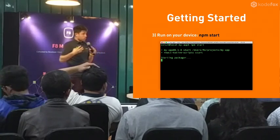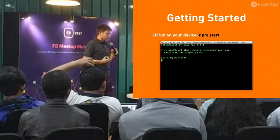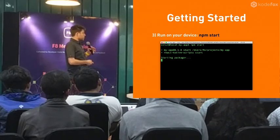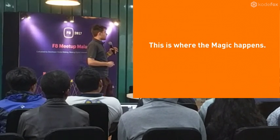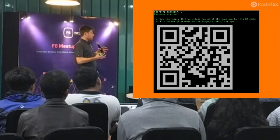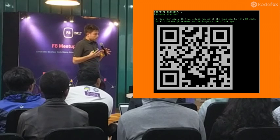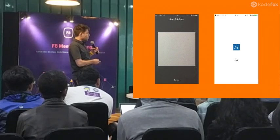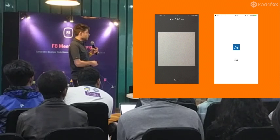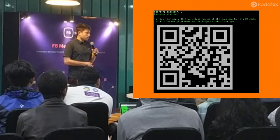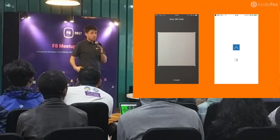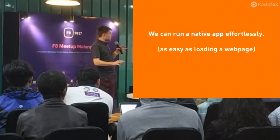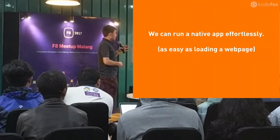The third step is running the code on the device, and this is where it gets exciting. You just run 'npm start' or 'yarn start' and it starts the packager. You get a QR code right in your terminal. Expo is an app you install on your phone — you open it, scan the QR code from your terminal, and you run the native app effortlessly on your phone, as easy as loading a web page.